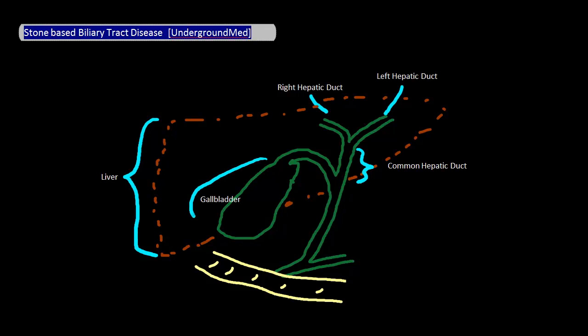We have the gallbladder, which is connected to the cystic duct. The cystic duct and the common hepatic duct join together to form the common bile duct, which joins with the pancreatic duct to empty into the small bowels.